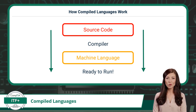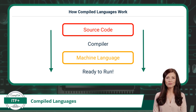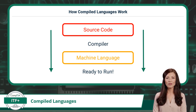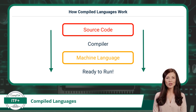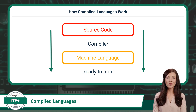Here's an important aspect of compiled languages: they are single-platform. A compiled program is tailored to run on a specific type of computer or platform. This means that if you've written a program using a compiled language, it will work best on the platform it was compiled for. If you want the program to run on a different platform, you'll need to recompile it for that specific platform.